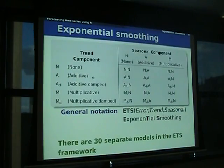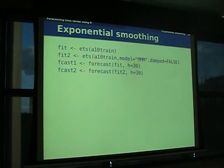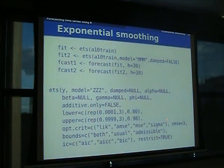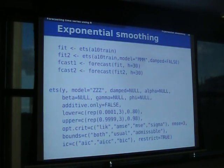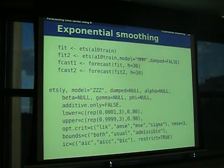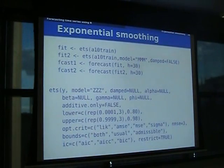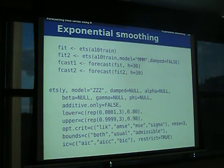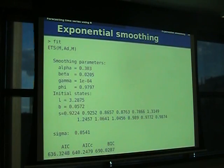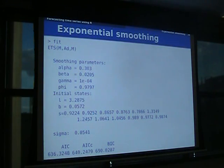If you fit a model and print it, it'll give you all the parameters in the model, the sigma (standard deviation of residuals), and the AIC, AICc, and BIC. These are measures of how good the model is. For forecasting, the AIC is really useful because asymptotically it's a measure of how well the model fits out of sample. So you minimise the AIC to get a good model. What ETS does is fit all 19 models, look at the AIC, and give you back the one with the smallest AIC.